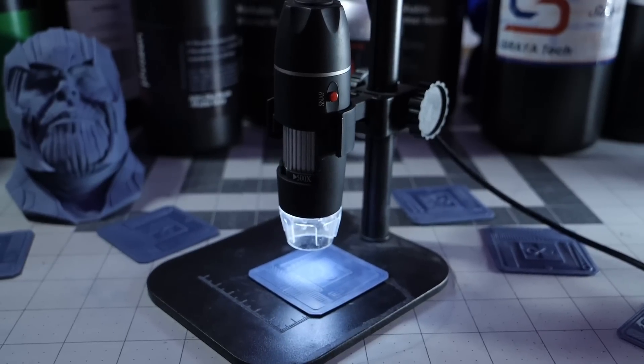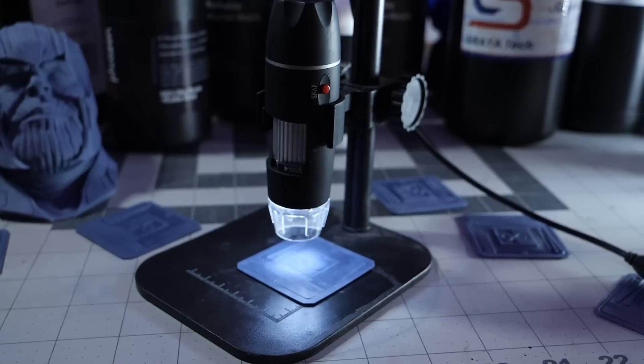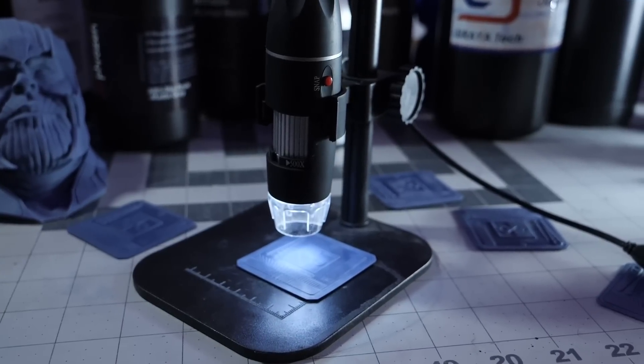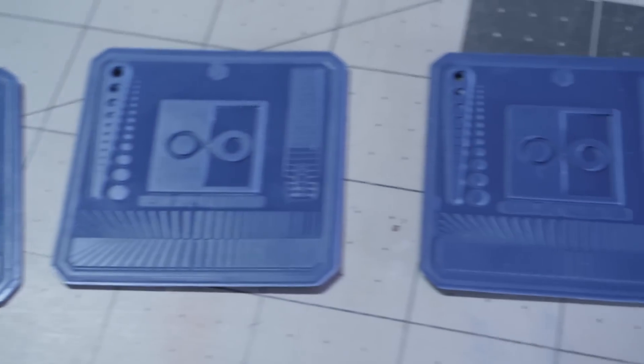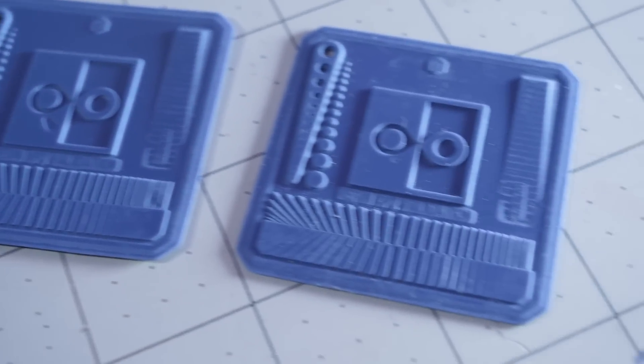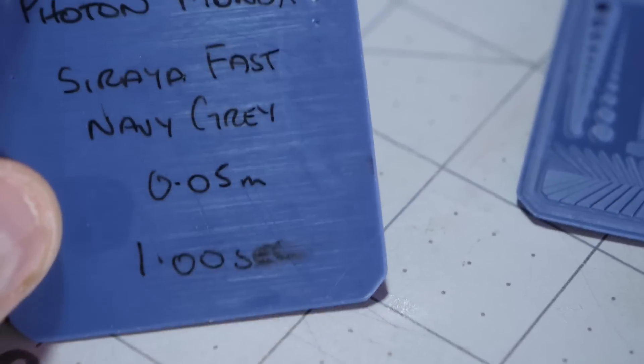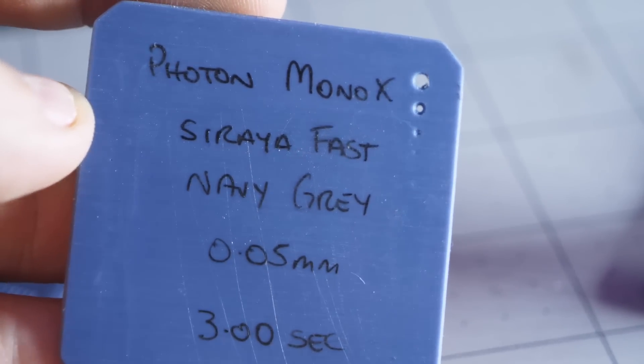However, if you are into resin printing, getting one of these microscopes always helps and it's about 15 bucks. These are a few examples of the XP2 validation test printed on my newly received Anycubic Photon Mono X in Siraya Tech Fast Navy Gray at 0.25 second increments, starting from one second all the way up to three seconds exposure.